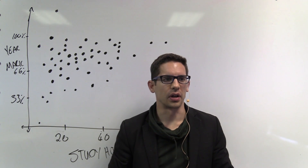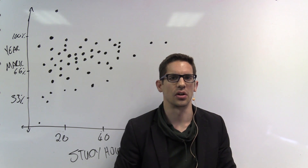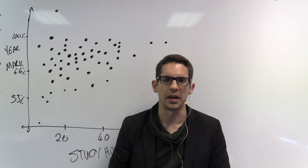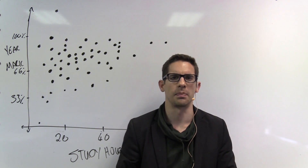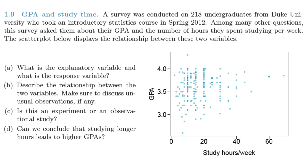In this video, we're going to look at question 1.9, which deals with GPA and study time. GPA is a general score you get for your studies, and in this study, they wanted to see whether there's a correlation between how much time students spend per week on their study and what the overall GPA score is. A survey was conducted on 218 undergraduates from Duke University who took an introductory statistics course in spring 2012. Among many other questions, this survey asked them about their GPA and the number of hours they spent studying per week, and the results are shown in a scatter plot.